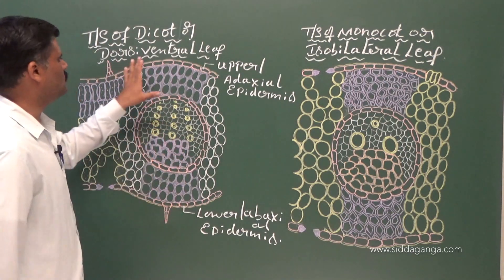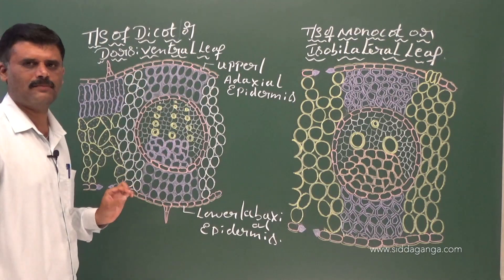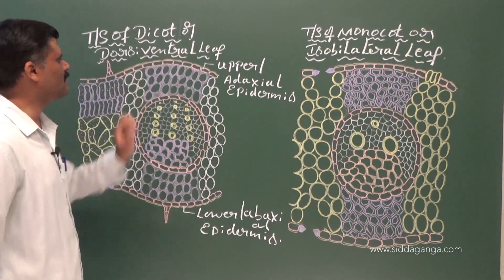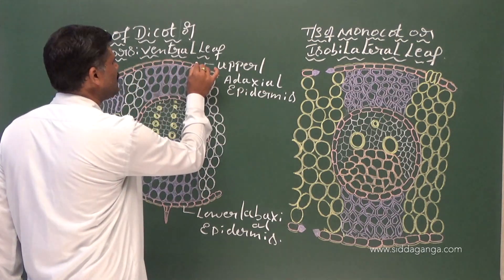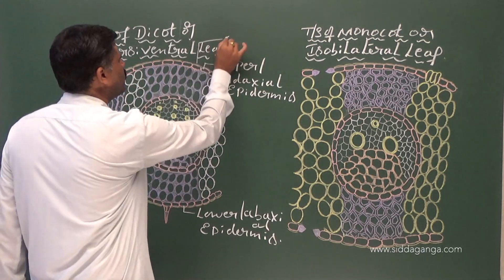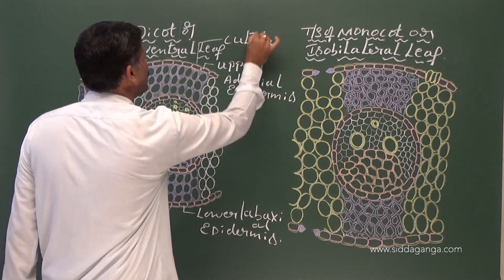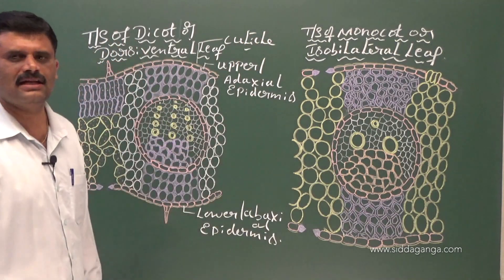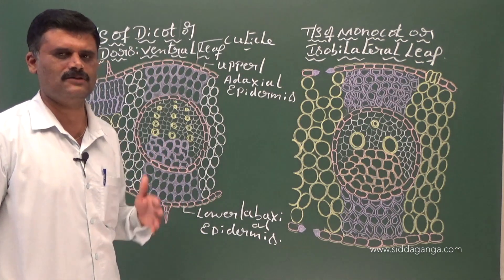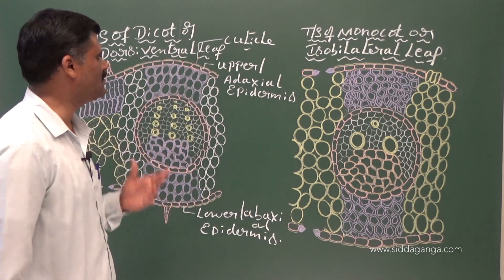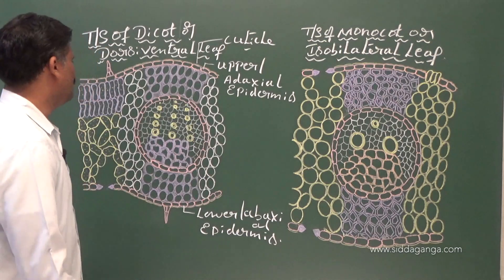The upper and lower epidermis is covered by a thin layer of cuticle. The cuticle is a waxy layer present above the epidermis of stem and leaves, but that waxy layer is absent in the roots.